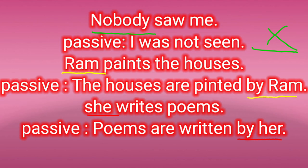Look at the examples. 'Nobody saw me' — its passive is 'I was not seen.' Here 'by agent' is removed. 'Ram paints the houses' — passive is 'The houses are painted by Ram,' where 'by agent' is added. 'He writes poems' — passive is 'Poems are written by him.' You can analyze whether 'by agent' is added or not.